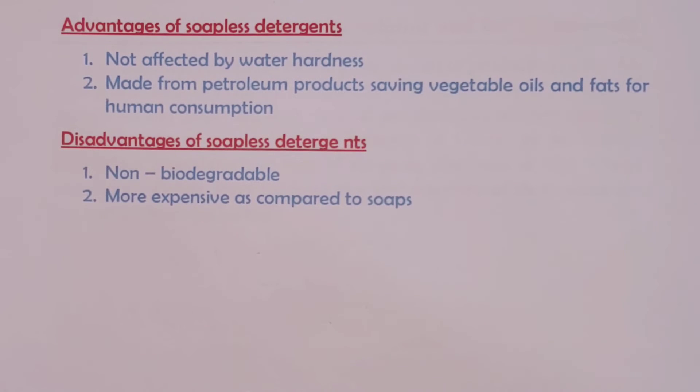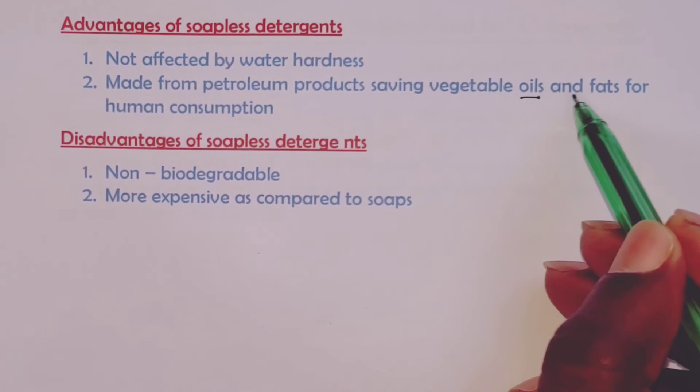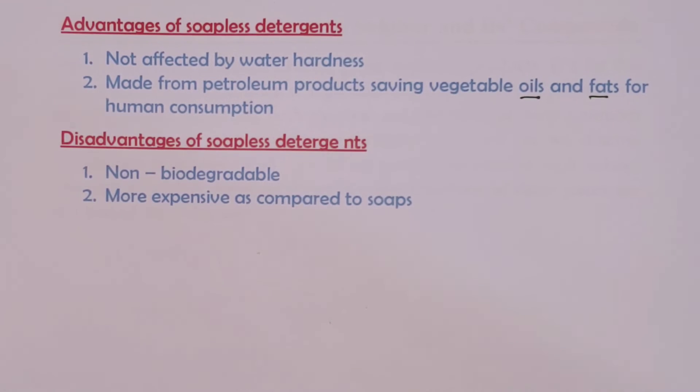Again, we have talked about these detergents being produced from petroleum products. The soapy detergents come from vegetable oils and animal fats. So when we get these soapless detergents from petroleum products, we end up saving the vegetable oils and animal fats for human consumption.